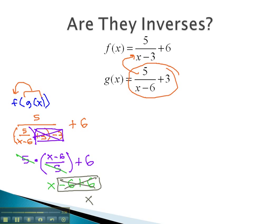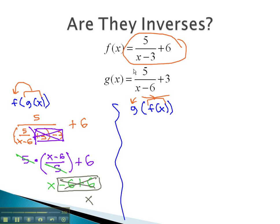It seems to suggest that these are inverses, but to be sure, we need to calculate the other composition, g(f(x)). This time, we're gonna plug f into the g function. We'll take the entire f function and plug it in for the x in g. This gives us 5 over x, which is now 5/(x - 3) + 6, minus 6, and plus 3 at the end.